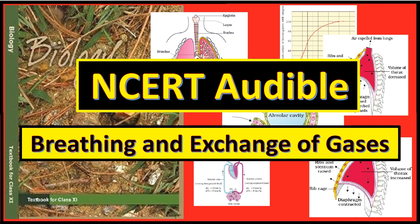In alveoli, where there is high partial pressure of oxygen, low partial pressure of carbon dioxide, lesser H+ ion concentration, and lower temperature, the factors are all favorable for formation of oxyhemoglobin. Whereas in the tissues, where low partial pressure of oxygen, high partial pressure of carbon dioxide, high H+ ion concentration, and higher temperature exist, the conditions are favorable for dissociation of oxygen from oxyhemoglobin. This clearly indicates oxygen gets bound to hemoglobin in the lung surface and gets dissociated at tissues. Every 100 ml of oxygenated blood can deliver around 5 ml of oxygen to the tissues under normal physiological conditions.